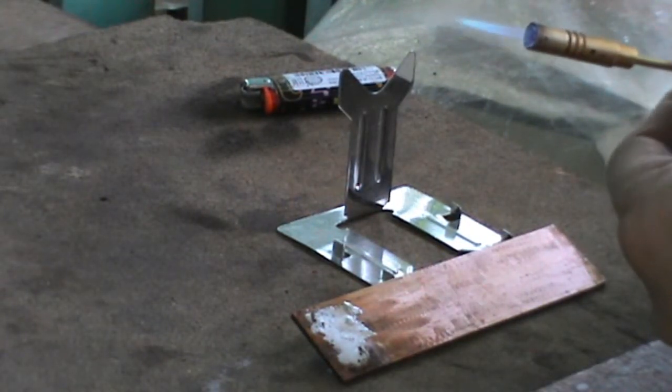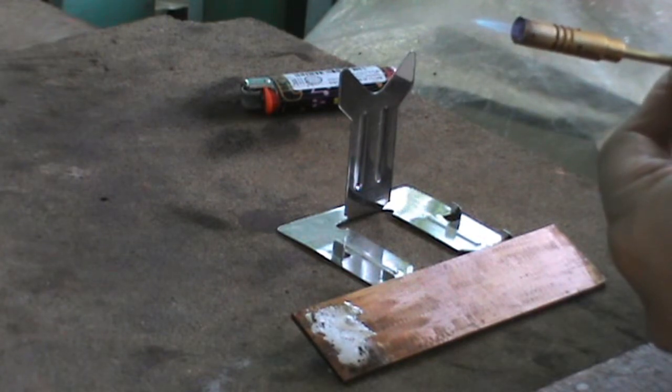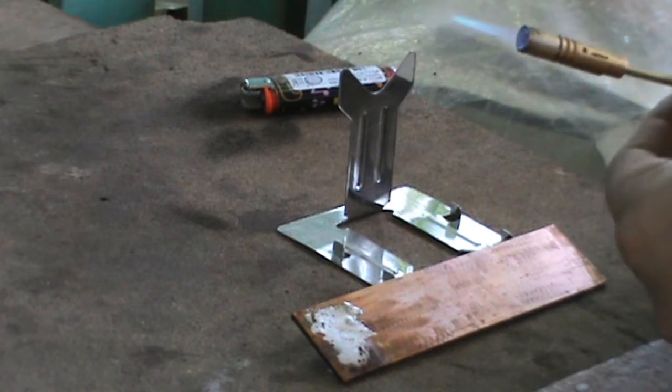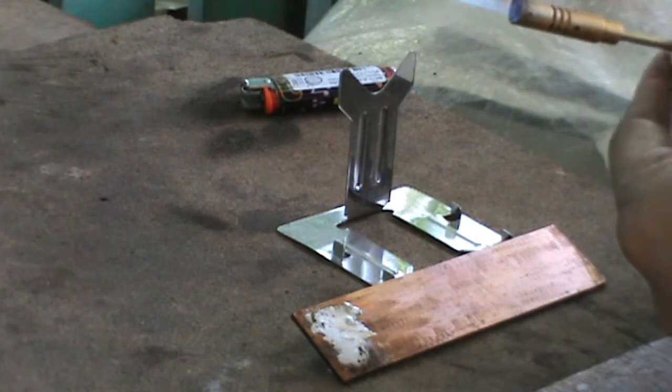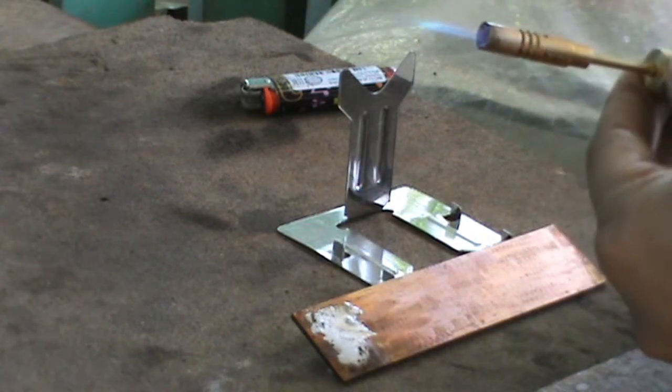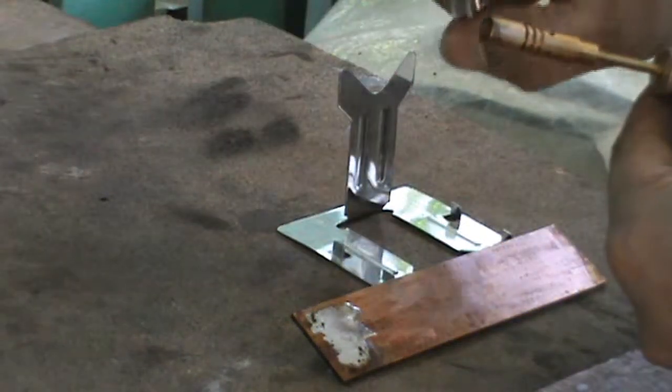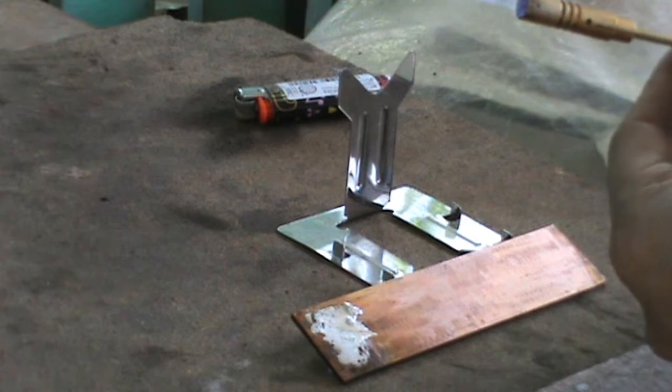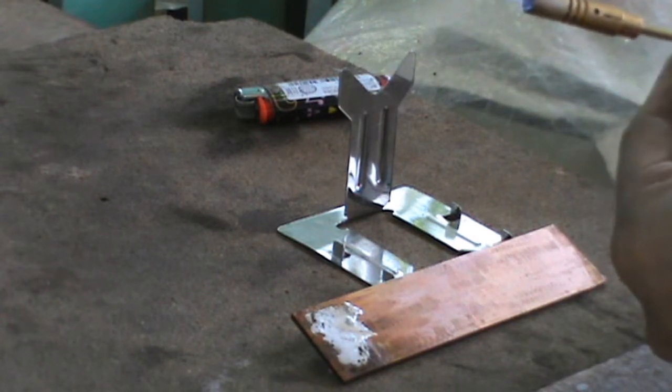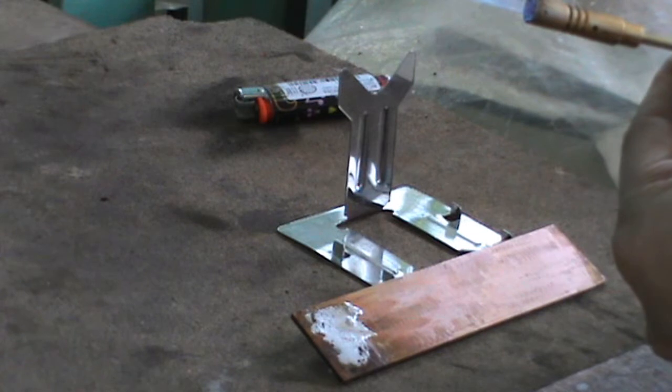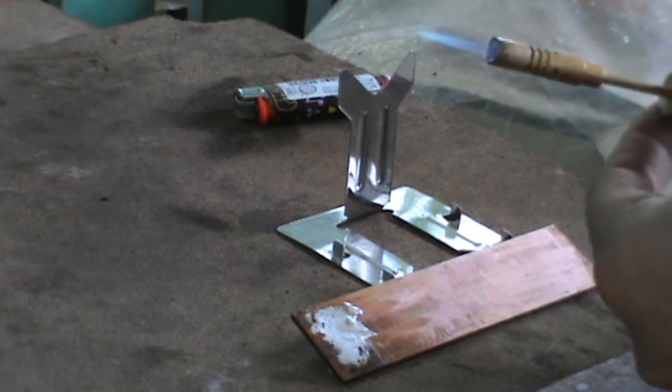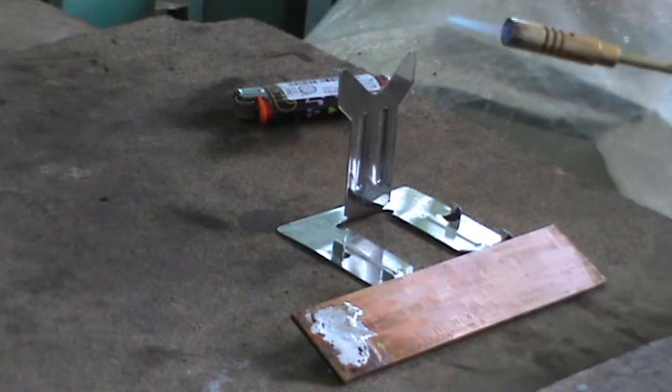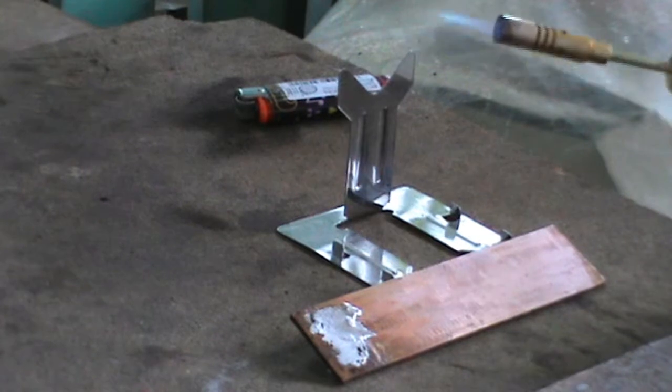And see how this pencil torch will perform. So we can basically adjust the flame by turning the knob. We can also turn the flame off by tightening the knob. So let's adjust it a bit so that we just have enough blue flame with a small tip.